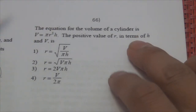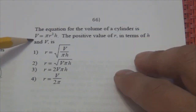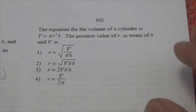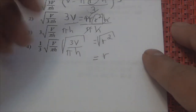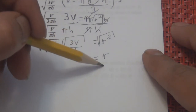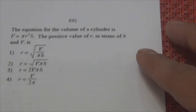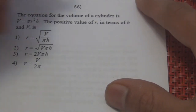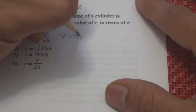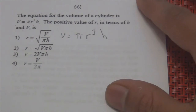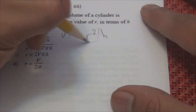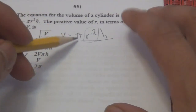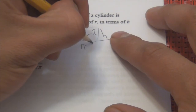The equation for the volume of a cylinder — same thing here. The positive value of R in terms of H and V: the square root of R squared is positive or negative R, so that's why this problem asks for the positive value of R. V equals pi R squared H. How do I solve for R? Pi and H are multiplying R, so I divide by pi and by H.